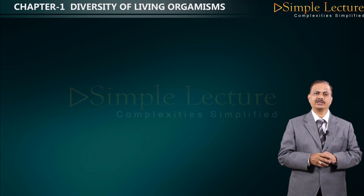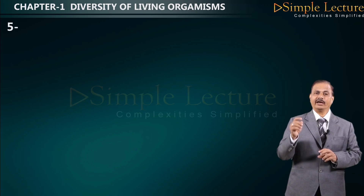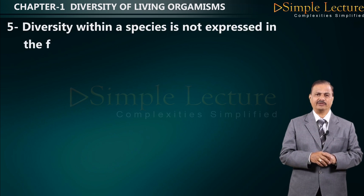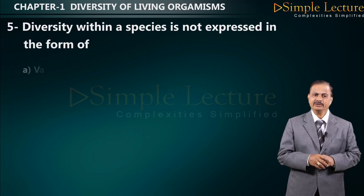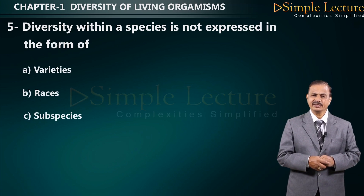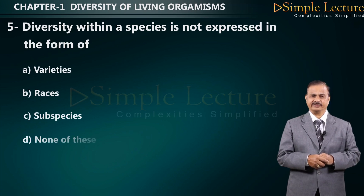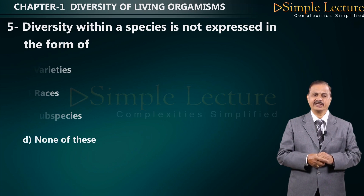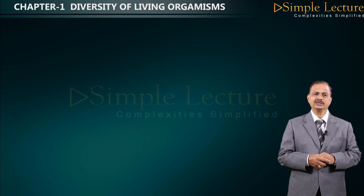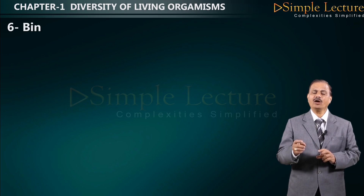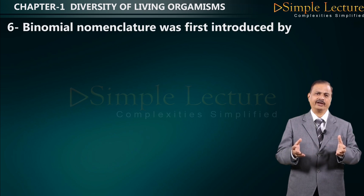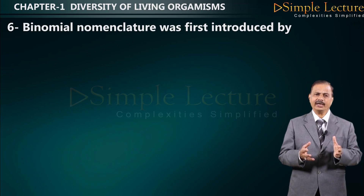Question number five: diversity within a species is not expressed in the form of — options are A: varieties, B: races, C: subspecies, D: none of these. The correct answer is D: none of these.